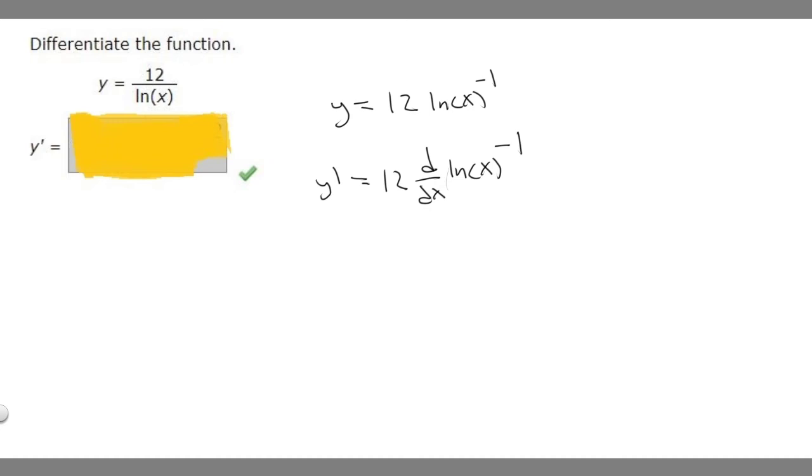So what is the derivative with respect to x of ln of x to the minus 1? What we would do here is just use the power rule combined with the chain rule. Because when we usually do the power rule, it's just an x. But since we have ln of x in the middle, we're going to have to use the chain rule.